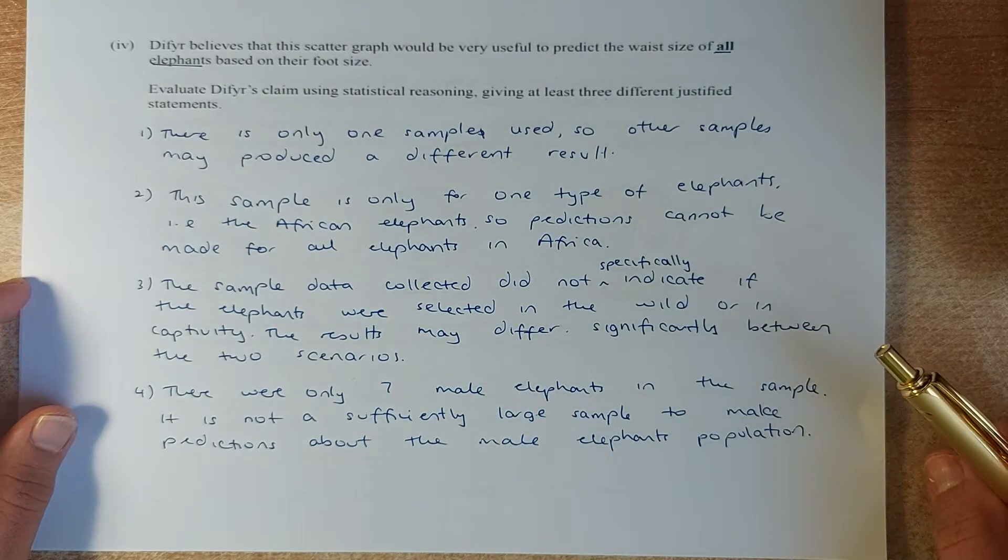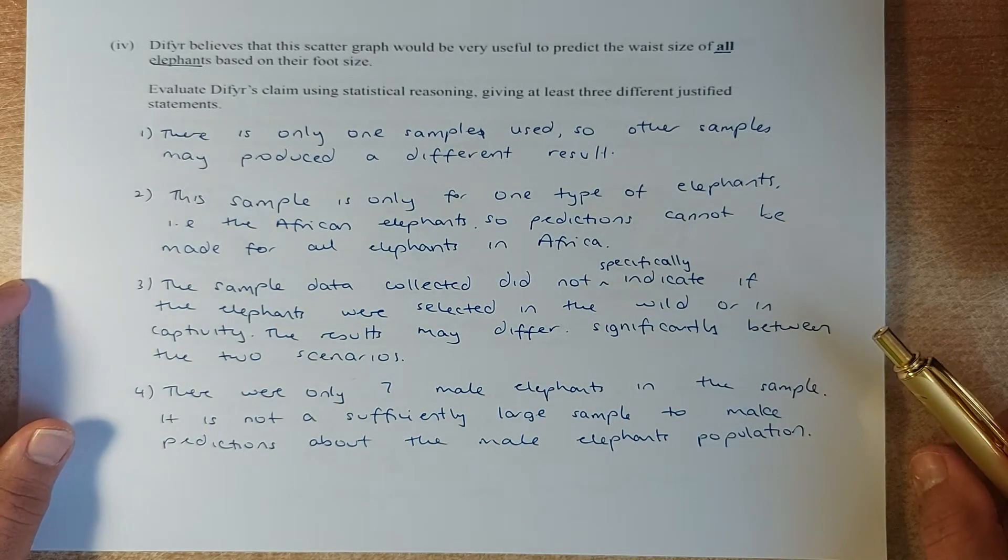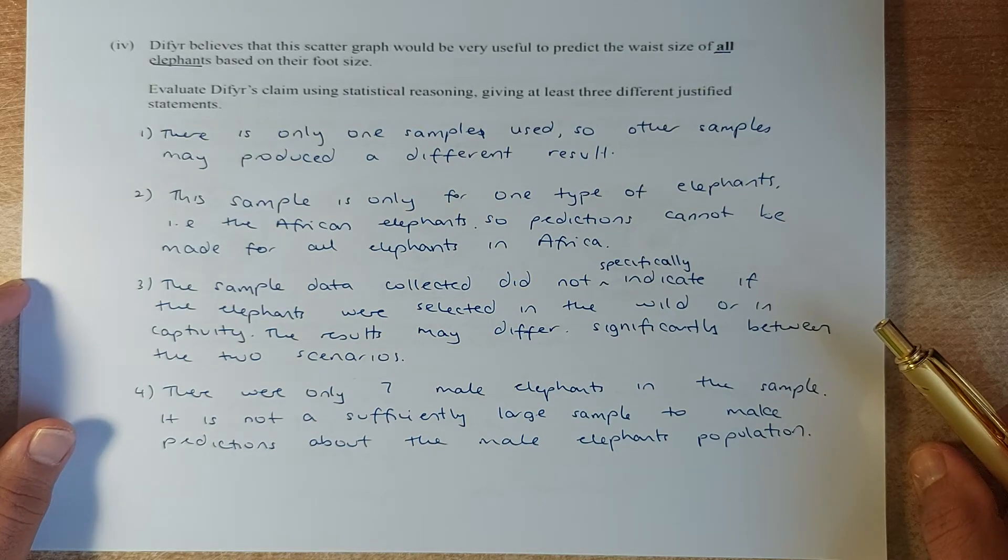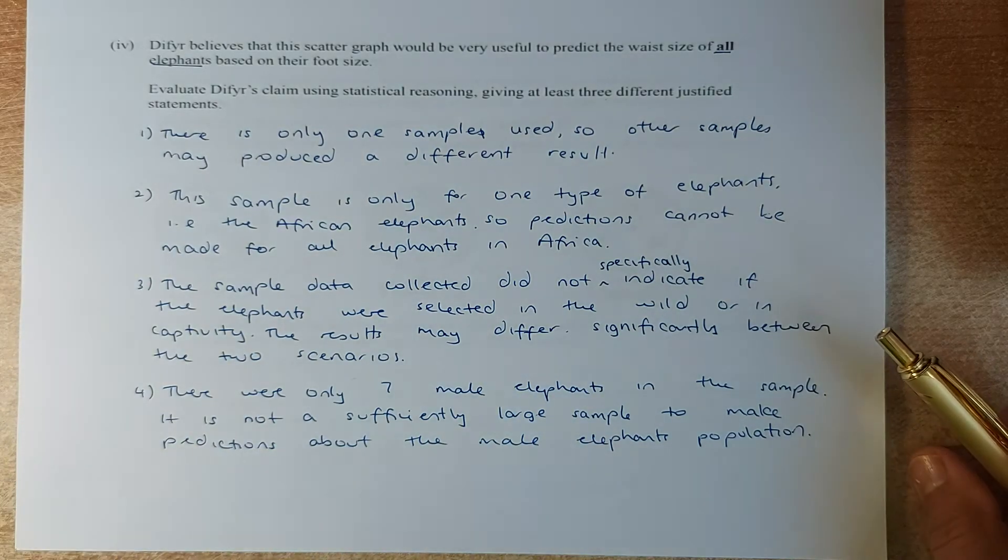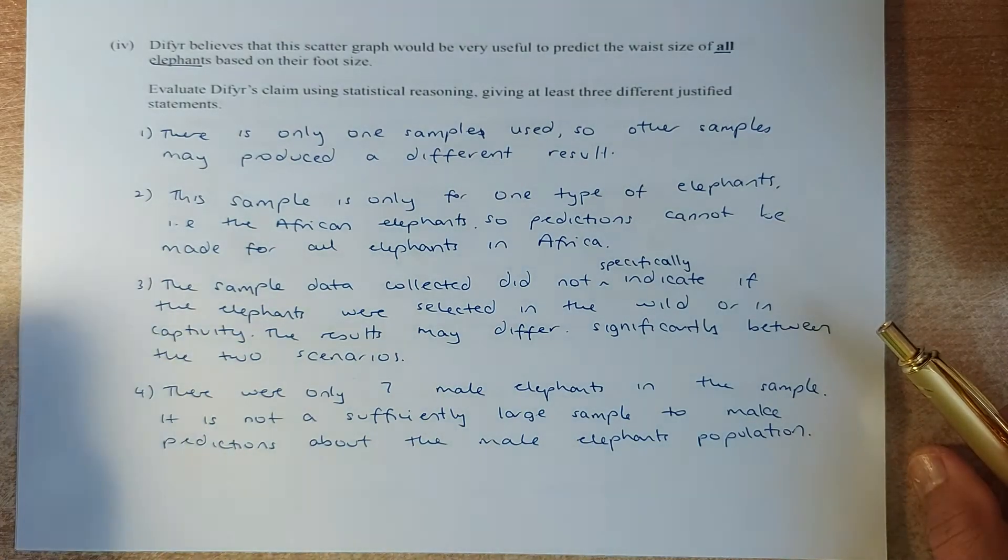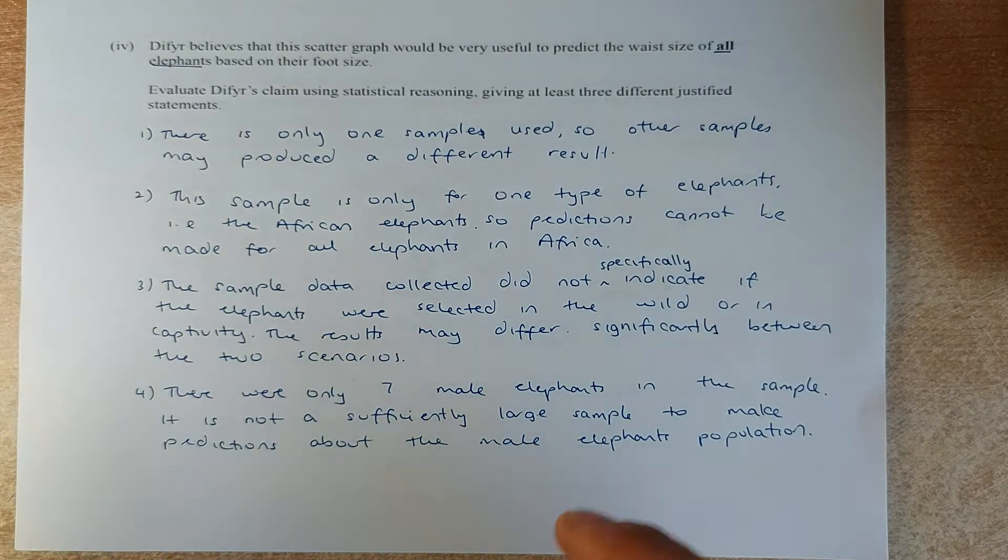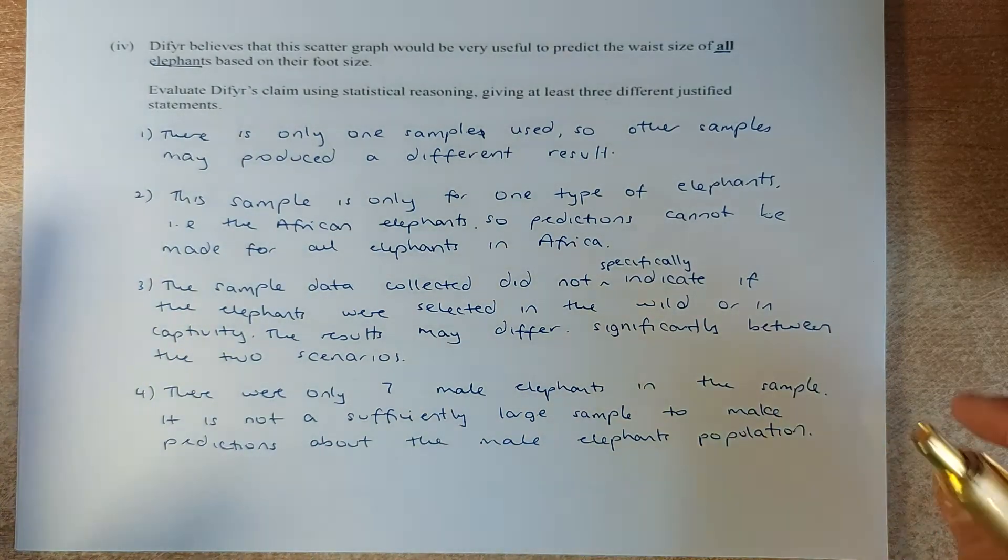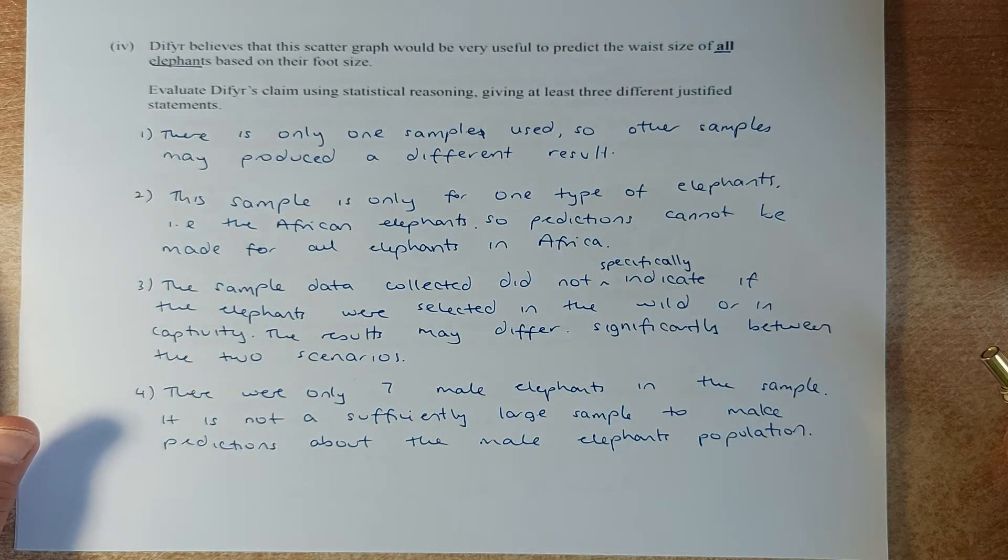The sample collected, the third point, the sample data collected did not specify which elephant were from the wild and which elephant were from the zoo. So if you know the proportion, then it will be a better outcome. But in this data set, you do not know which belongs to the zoo and which belongs to the wild. So that's why it's not very accurate.